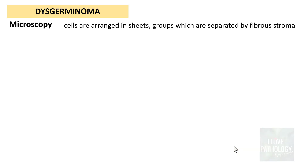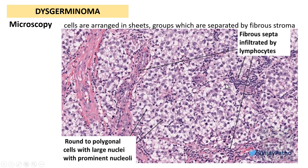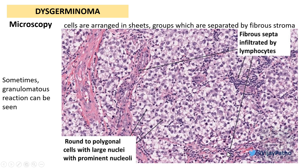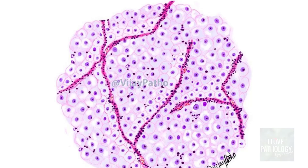Microscopically, the cells of dysgerminoma are arranged in sheets and groups, which are separated by a fibrous stroma. These cells are round to polygonal, with very large nuclei and prominent nucleoli. These sheets of cells are separated by fibrous stroma, and note that this fibrous stroma is infiltrated by lymphocytes — all those small blue dots you are seeing are lymphocytes. Sometimes you can find granulomatous reaction in these tumors. The illustration shows large polygonal round cells with centrally placed nuclei, prominent nucleoli, and fibrous stroma infiltrated by lymphocytes.